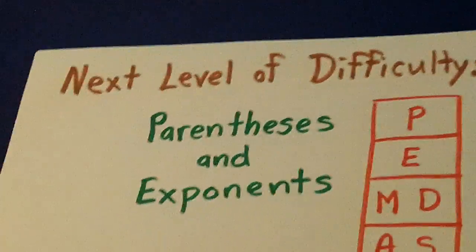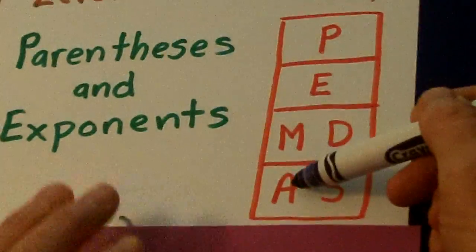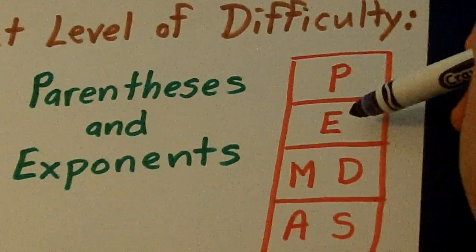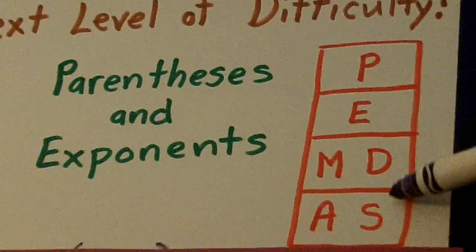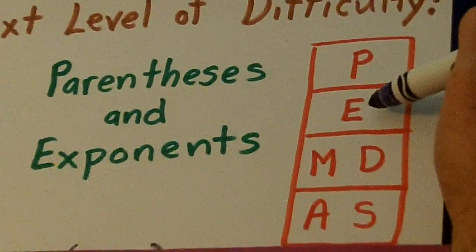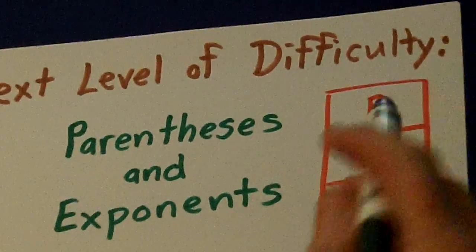Next level of difficulty, we're going to expand the multiplication and division comes before addition and subtraction. We're going to expand it with parentheses and exponents come before both of them. And if you ever have parentheses and exponents in the same line, parentheses, you will do that one first.